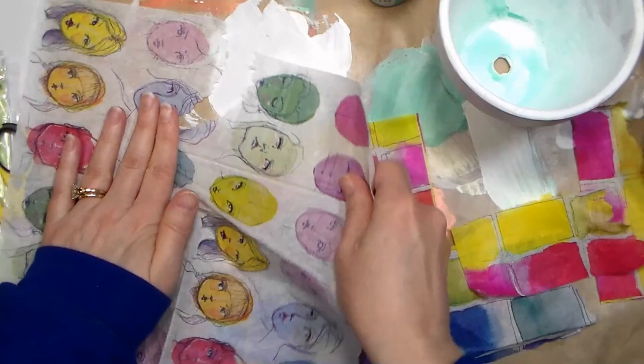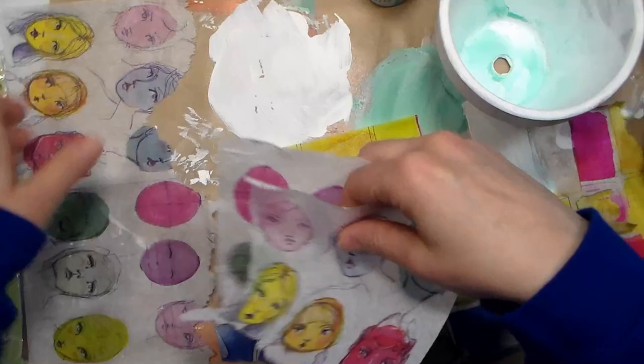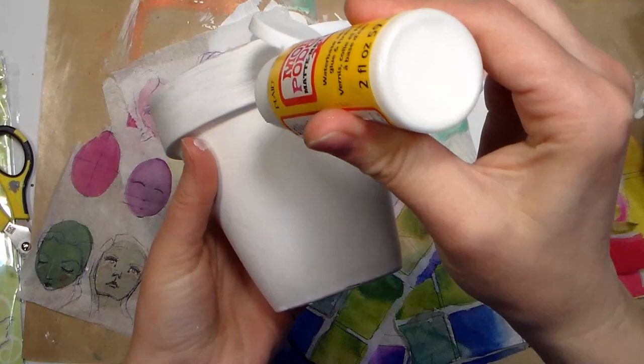These will be my kind of focal point, so I'll put these on first and then I'll fill in with the swatch napkin. So what I'm gonna use to adhere this is some Mod Podge. You can use any sort of decoupage medium you have, or even white glue, it doesn't matter.